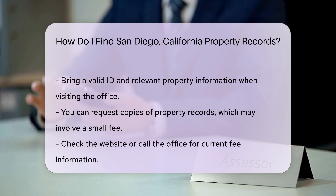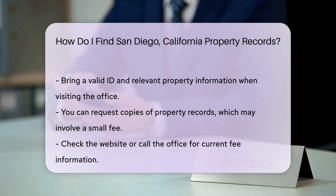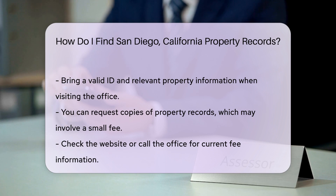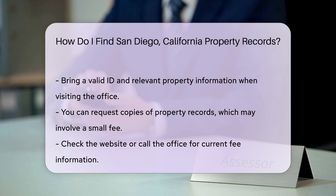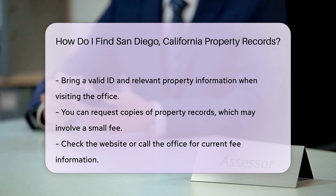You can also request copies of property records. There might be a small fee for this service. Fees can vary, so it's a good idea to check the website or call the office for the most current information. Another useful resource is the San Diego County Treasurer Tax Collector's website, where you can find information about property taxes and payment history.